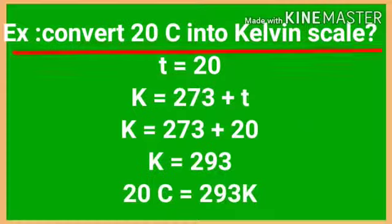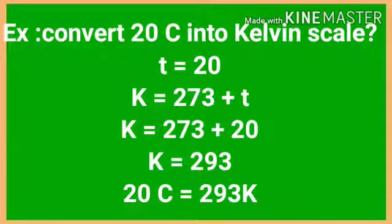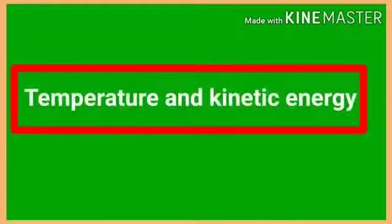Now let's do an example: convert 20 degree centigrade into Kelvin scale. t = 20°C, so K = 273 + 20, which is equal to 293. Therefore, 20 degree centigrade is equal to 293 Kelvin.